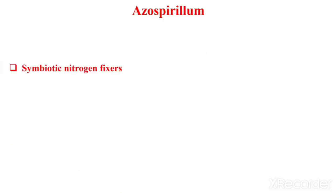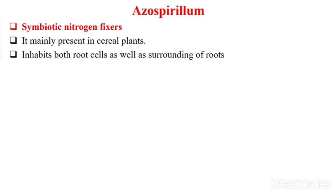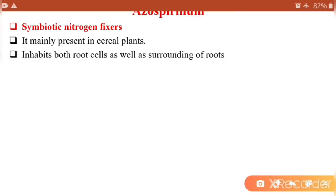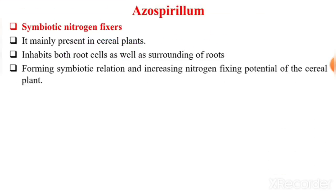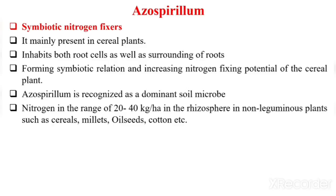The next type is Azospirillum, which is also an associative symbiotic nitrogen fixer. It is mainly present in cereal plants, inhabiting both root cells as well as the surrounding area of roots, forming a symbiotic relation and increasing nitrogen fixing potential. Azospirillum is recognized as a dominant soil microbe with nitrogen-fixing ability in the range of 20 to 40 kg per hectare in the rhizosphere of non-leguminous plants.